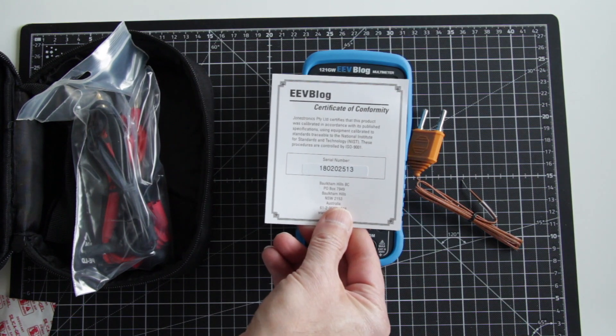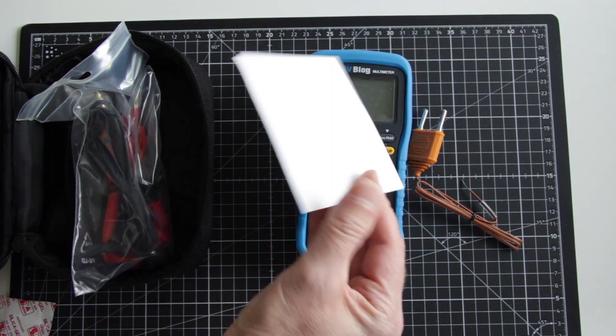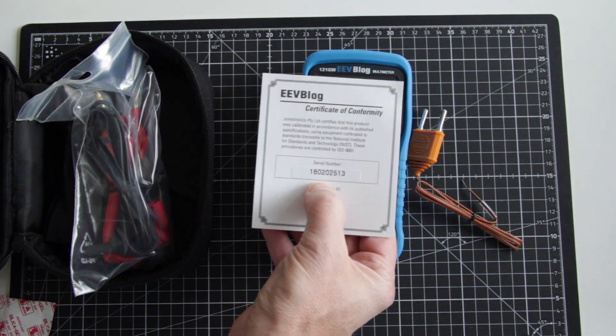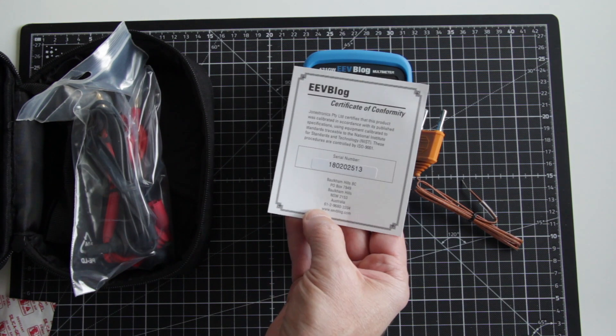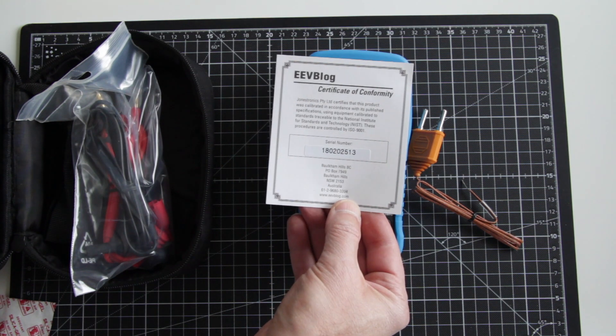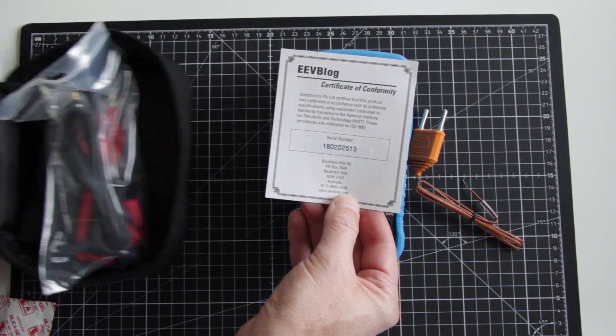And I get this certificate. That's nice. I don't think this serial number is personal data in any way, so I show it here to you. This is my multimeter now.